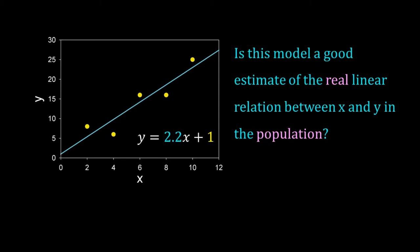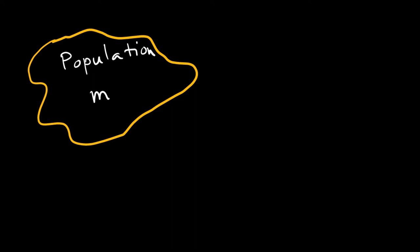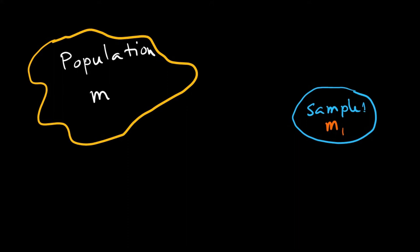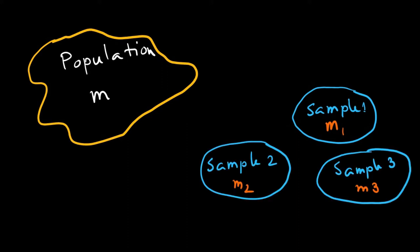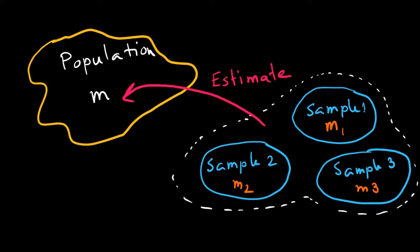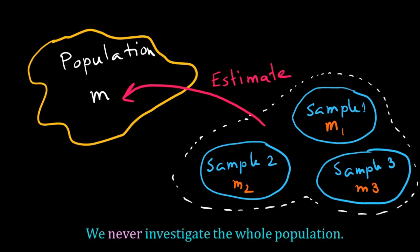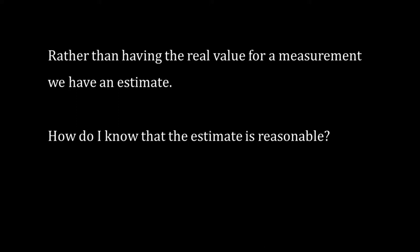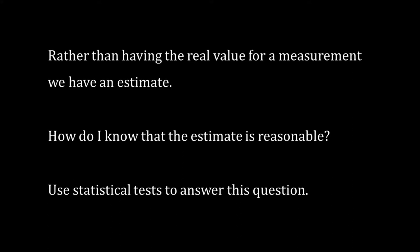That's quite a mouthful, so let me elaborate. We go back to the key assumption of statistical analysis. We assume that there is a population and from that population we are doing some random sampling. When we do an experiment and make measurements, we are actually generating a sample. From the sampled measurement we want to estimate the measurements for the population — note that you will never be able to investigate the whole population. Rather than having the real value for a measurement in the population, we have an estimate. How do I know that estimate is reasonable? To answer this type of question we use statistical tests.